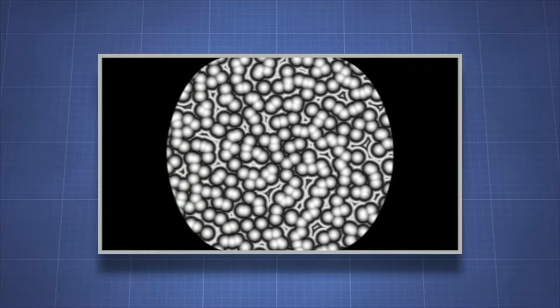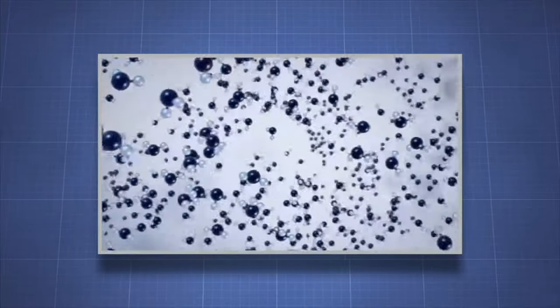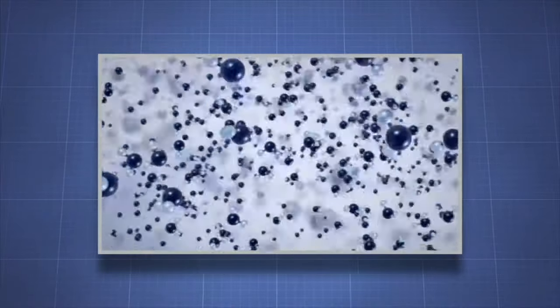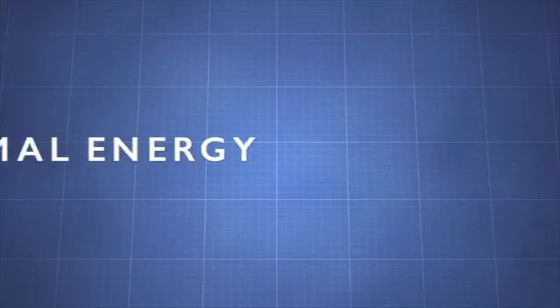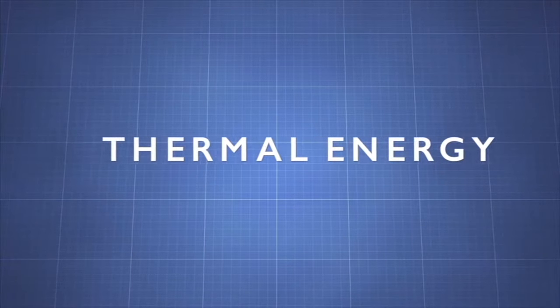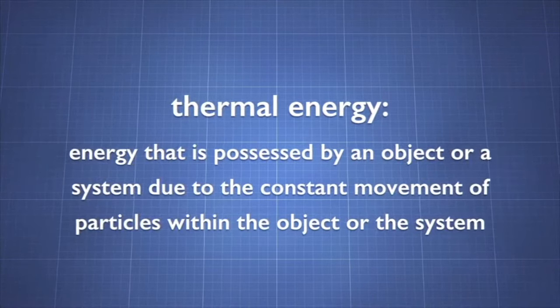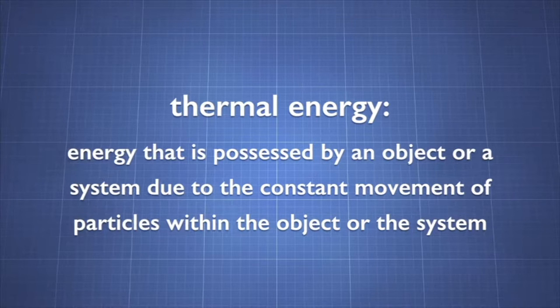You would see that all of the object's atoms and molecules are in constant motion. The motion gives kinetic energy to these vibrating particles. This type of kinetic energy is known as thermal energy. Thermal energy is internal energy that is possessed by an object or a system due to the constant movement of particles within the object or the system.